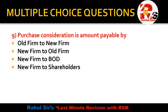Question 9: Purchase consideration is the amount payable by — old firm to new firm, new firm to old firm, new firm to board of directors, or new firm to shareholders? When we purchase someone's business, we pay them. So the new firm pays the old firm. I purchased your business — I am the new firm, you are the old firm, so I pay you. That is why new firm pays to old firm.